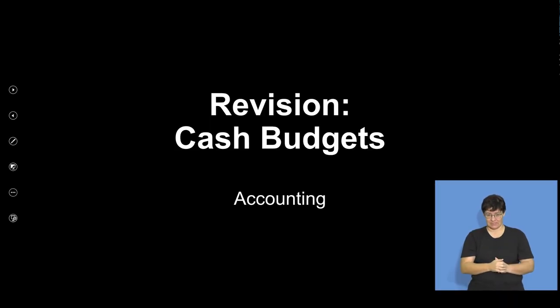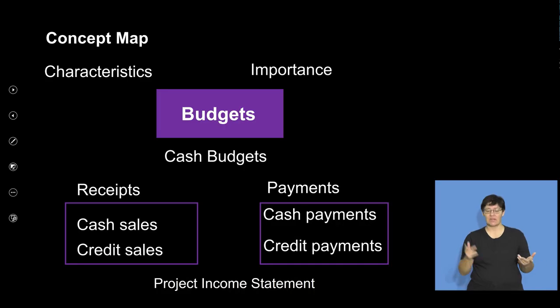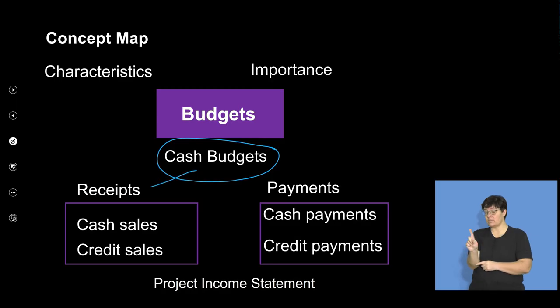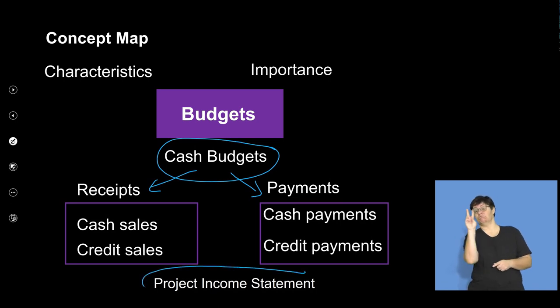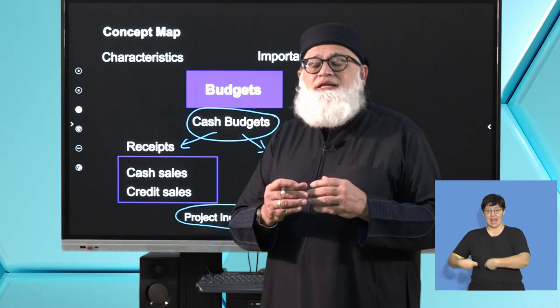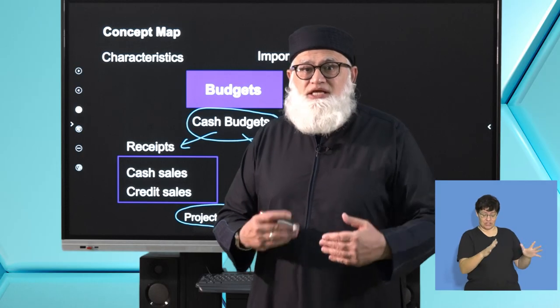Welcome, Accounting Boffins. You are with Ashraf Patel and the crew. Today we're continuing with cash budgets — we're doing a revision question to ensure that you fully understand all the questions around cash budgets. A quick recap: when dealing with the cash budget, you are looking at receipts and payments. When working with a projected income statement, you are looking at incomes and expenses — income that we have earned and expenses that we have incurred.